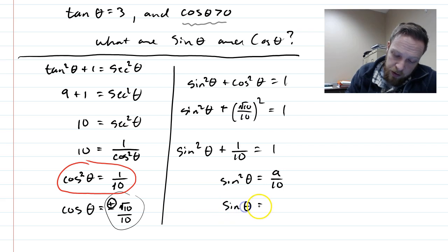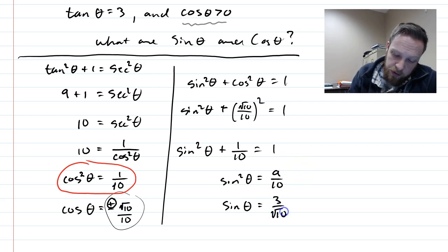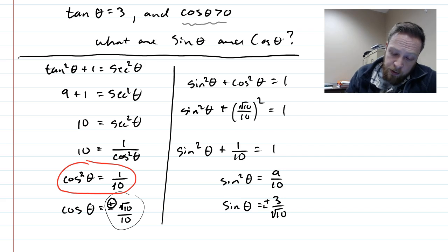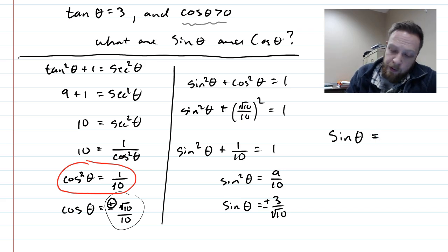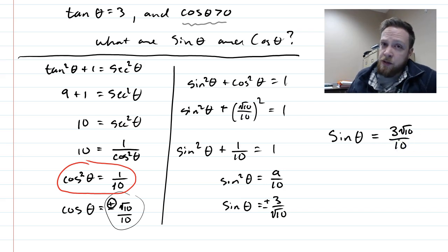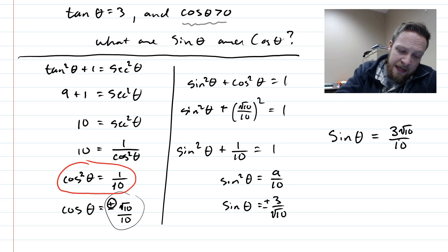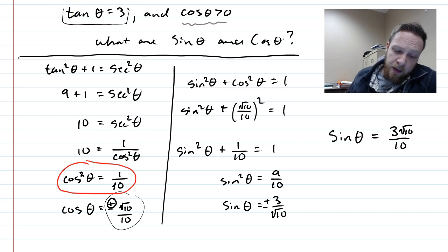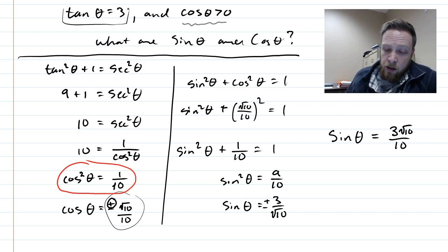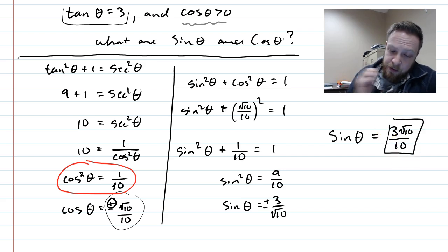So sine of theta equals the square root of nine-tenths, which is three over root ten — plus or minus. Rationalizing gives three root ten over ten. To determine the sign: tangent of theta equals three, and tangent is sine over cosine. Since cosine is positive and tangent is positive, sine must also be positive. So sine of theta equals positive three root ten over ten.